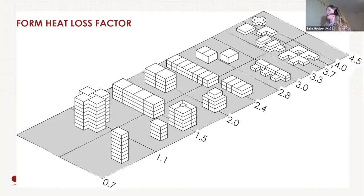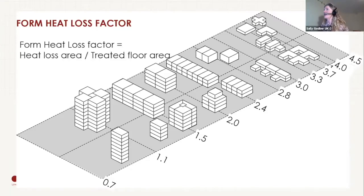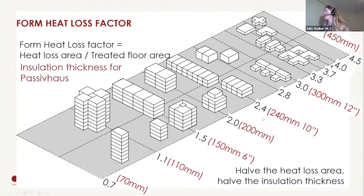This is definitely one for the geeks. The form factor is the heat loss area divided by the floor area, so the lower the number the better. It means less insulation. Typically for the UK, if we have a form factor of 2.4, that means we need 10 inches of insulation. If we have a form factor of 3, we need 12 inches of insulation, so we really want to be down this end of things.